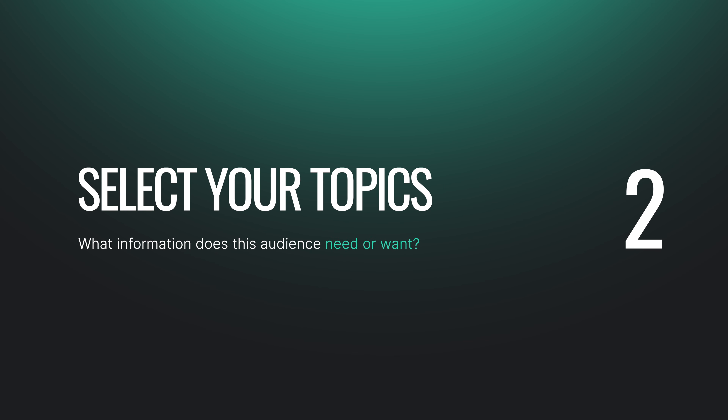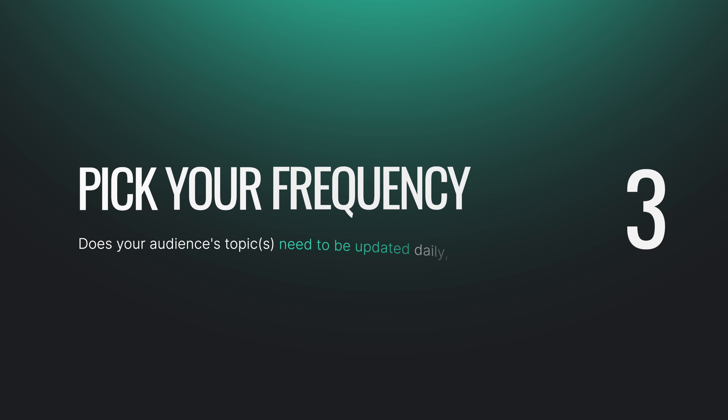The second step is select your topic — what do you want to talk about in your newsletter? What information does this audience need and want? If you know your audience, then you know exactly how to create a newsletter that is going to grab their attention. The third one is pick your frequency: how often do you want to send it? Is it going to be daily, weekly, bi-weekly, monthly? For the sake of this training, I am going to show you how to create a monthly newsletter.